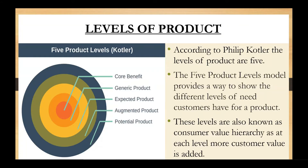All five levels are also known as value hierarchy, because at each level more customer value is added into the product. As a marketer, when you are designing a product, you have to first think about what core benefit your product is going to provide to the customer. There are so many brands available in the market — how are you going to distinguish your product from competitors? The differentiation and unique values added to your product will be added at each of these different levels defined by Kotler.